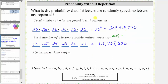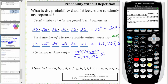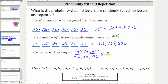Now to find the probability that if six letters are randomly typed no letters are repeated, we take the number of six-letter sequences without repetition and divide by the total number with repetition, which gives us 165,765,600 divided by 308,915,776. To four decimal places, we have approximately 0.5366, which is 53.66%.